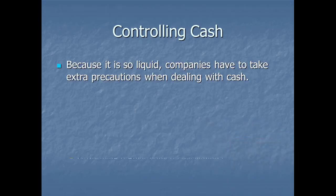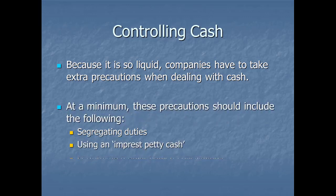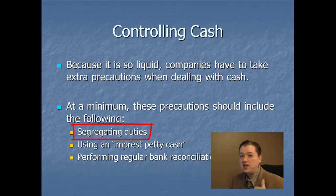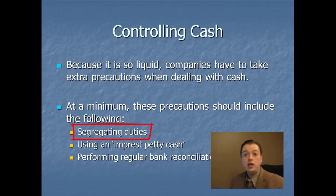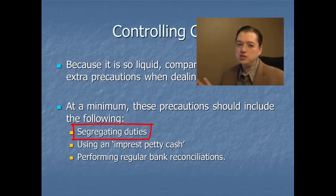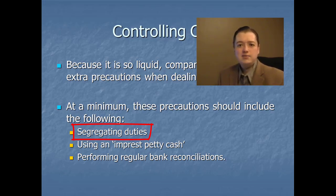There are three precautions at a minimum that you should have as a company. The first and most important is segregation of duties — breaking down responsibilities over cash so that no one person has total control. So if I write the checks, then you do the journal entries; a third person does the posting; and a fourth person comes in and does an internal or external audit to make sure none of us are cheating or colluding. The idea is that the more people involved, the harder it is to keep a fraud secret or even get it started.